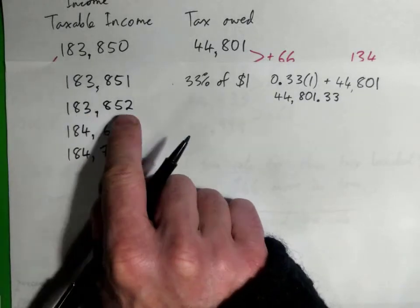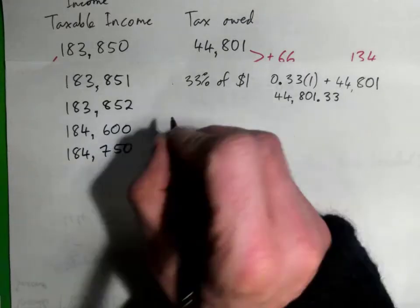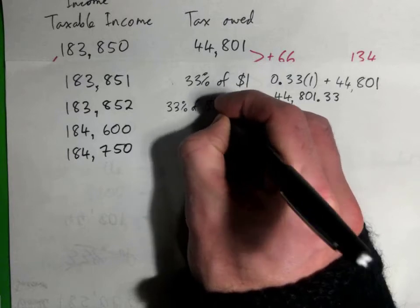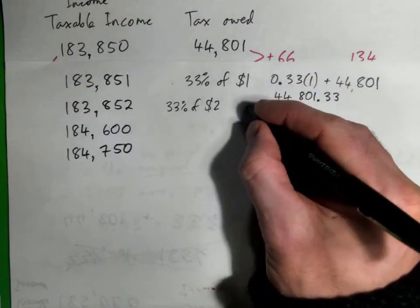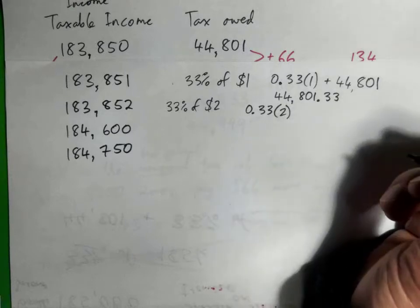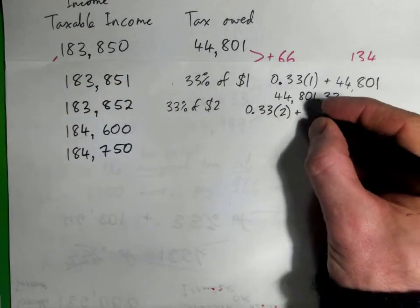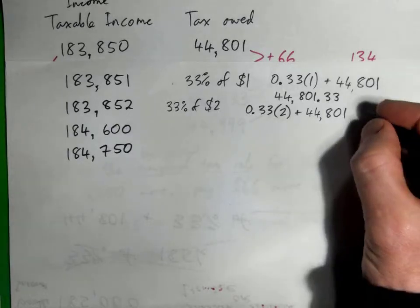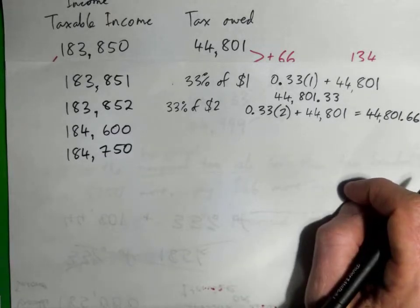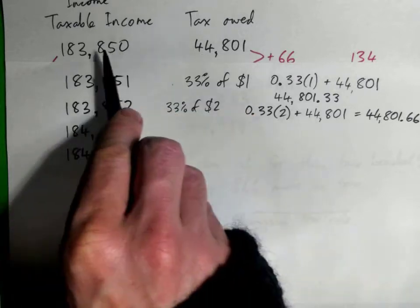So in this case, we've earned $2 more, correct? So we've got to go get 33% of the $2 and add it on, basically. So it's just 0.33 times 2, which would be 66 cents. And we add on what we already owed from the $183,850. So if we figure that out, it's just $44,801.66. So you're paying 33% on the money that you earn above this.